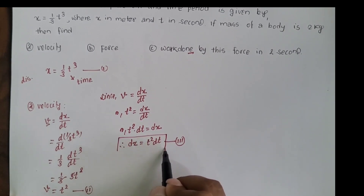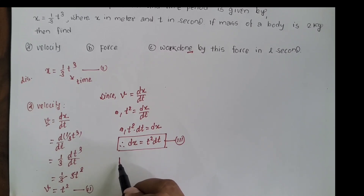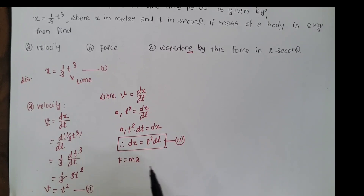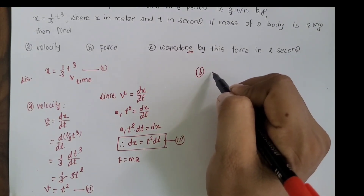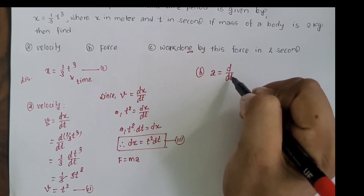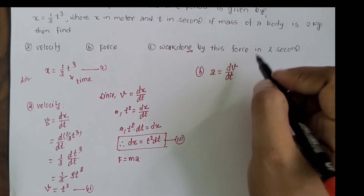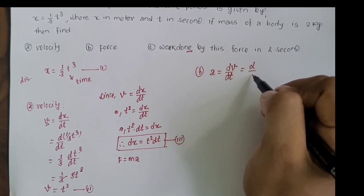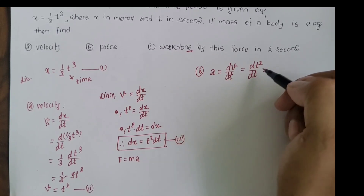For the second part, find the force. As you know, the force acting on the object can be calculated by Newton's second law: F = ma. To find acceleration, we take the rate of change of velocity with respect to time — that is, a = dv/dt. Substituting v = t², the derivative of t² with respect to t gives a = 2t.